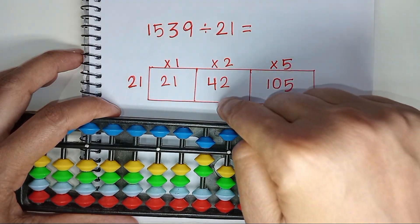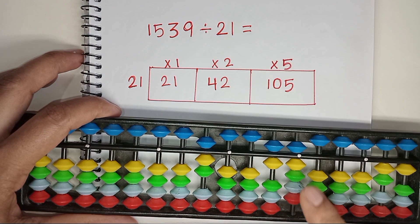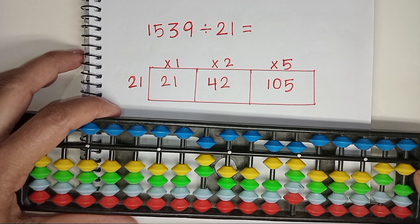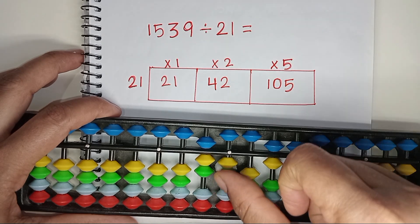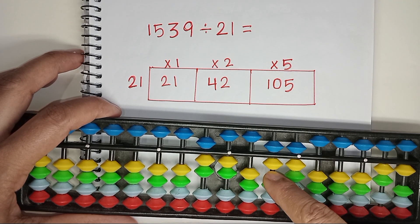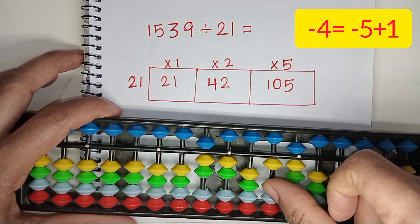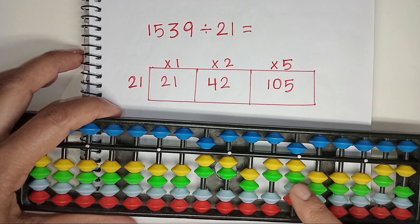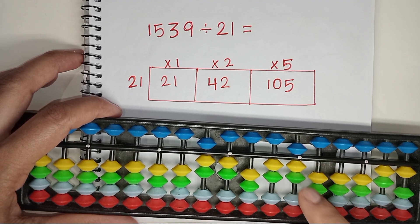So again we will consider 42. 21 times 2 is 42. As we consider 2 rods and divisor is double digit, jump 1 rod and place the answer here. 21 times 2 is 42. We need to less 4 from here. But we cannot less 4 directly. To less 4, we need to apply 5's complements: less a 5, add a 1, and less 2 from that rod. 2 and 7, 27 is left.